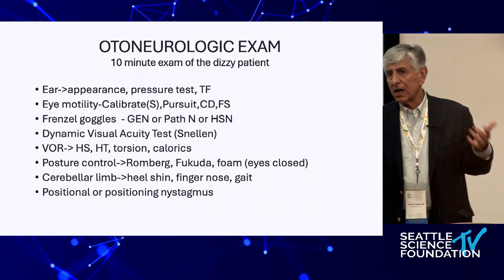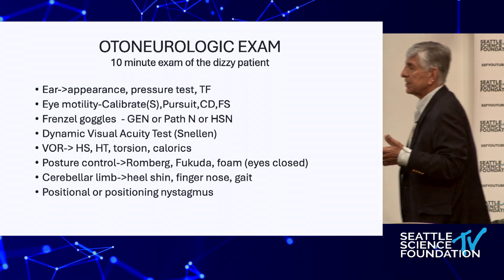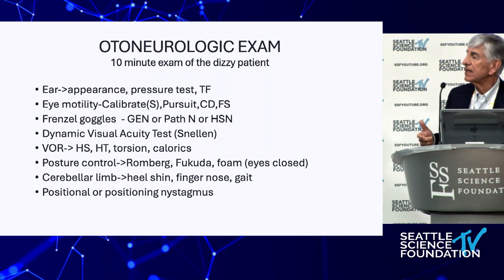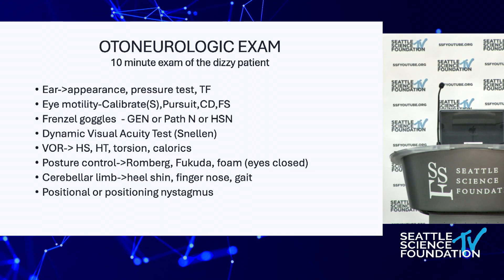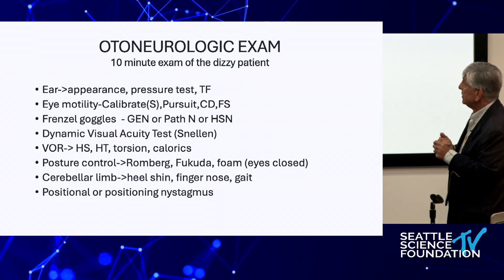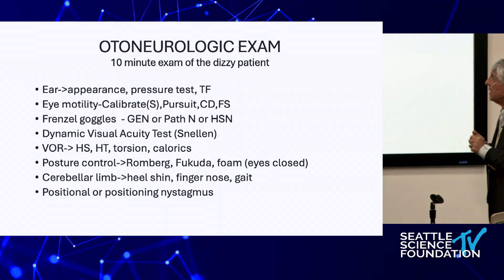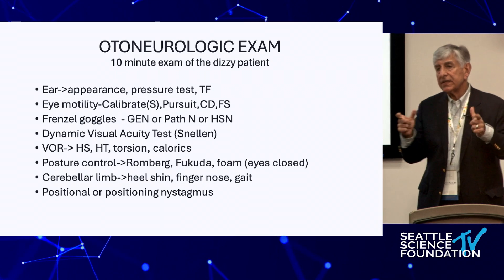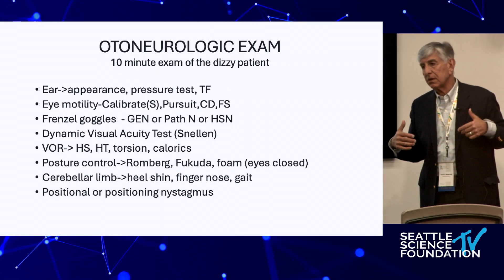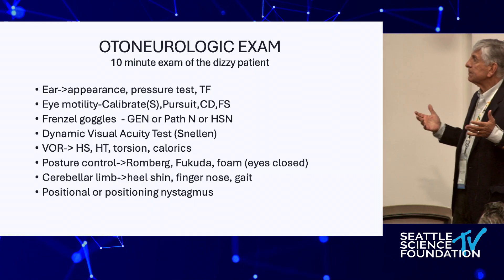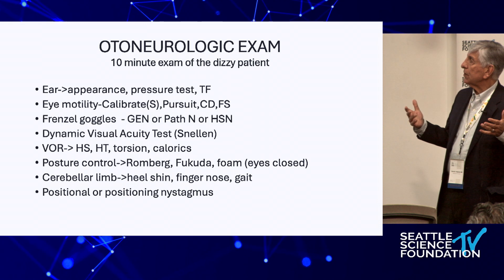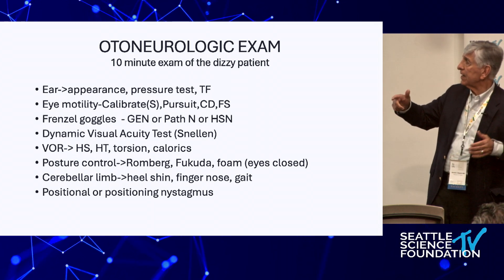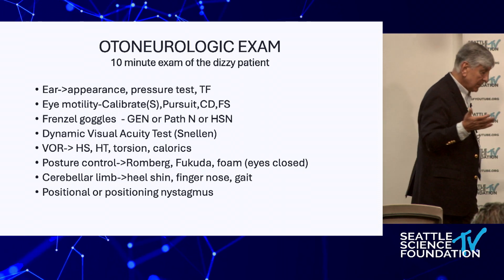The trouble is that 10 minutes extends when your dizzy patient says they've been dizzy for years and it's 4:30 in the afternoon. But these are all easy examinations: ear exam, pressure test, tuning fork test, eye motility check. Eye motility is essentially what an ENG is — you can do a pretty good ENG or VNG in the office just by watching eye motility. Calibration includes saccades, pursuit, convergence, divergence, and visual fixation.